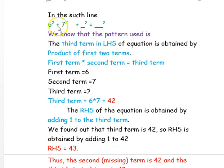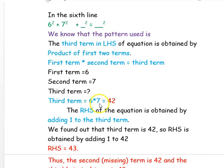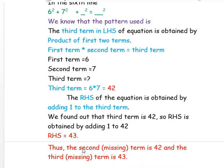In the sixth line, it is given 6² + 7² + (dash)² = (dash)². The third term is obtained by multiplying the first two terms: 6 × 7 = 42. The right-hand side is obtained by adding 1 to the third term: 42 + 1 = 43. So the second missing term is 42 and the right-hand side missing term is 43.